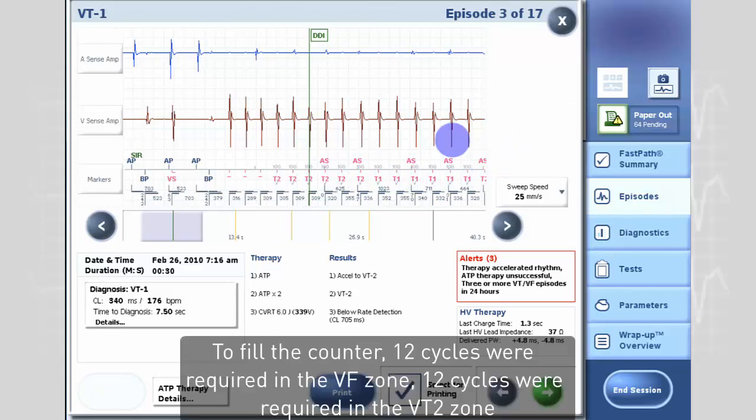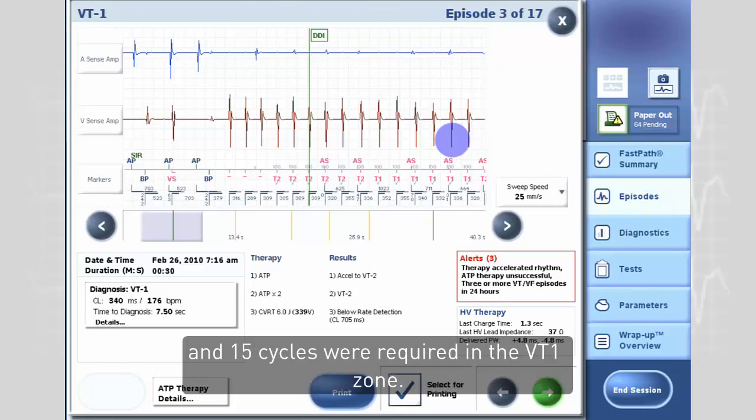To fill the counter, 12 cycles were required in the VF zone, 12 cycles were required in the VT2 zone, and 15 cycles were required in the VT1 zone.